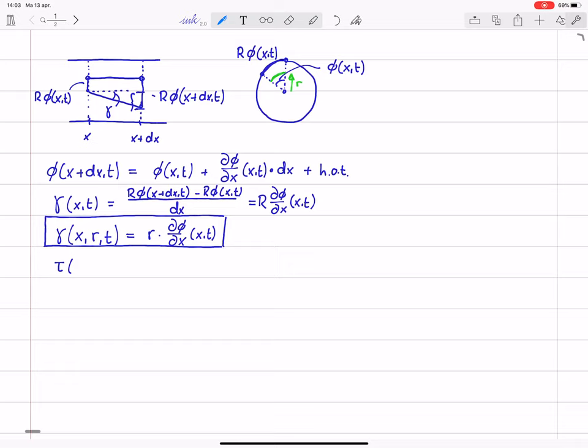Now the shear stress τ, which will also depend on x, r and t, is simply G times γ, where G is this shear modulus. So this is r times G times dφ/dx of x and t. So now we also have this expression for the shear stress, which is good, that we are going to need, because the most important thing is that we see that this shear stress depends on r linearly. So that means that if we make a sketch of the cross section and indicate the shear stress along a radial line, we will see that it is zero in the center and maximum at the outer circumference. So this will typically be the distribution of τ in a cross section. So τ is not constant, it varies linearly.